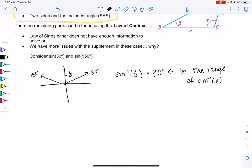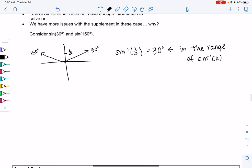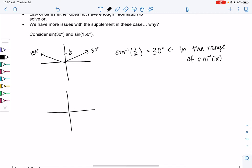And so maybe the angle's actually 150, but sine inverse won't tell us that. So we'd have to figure that out on our own.